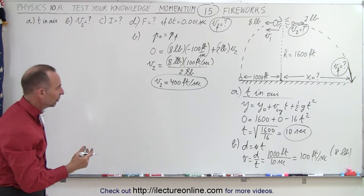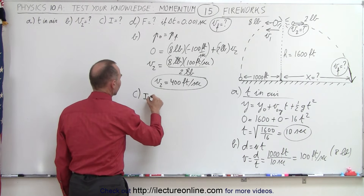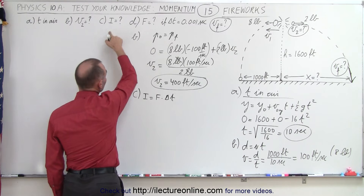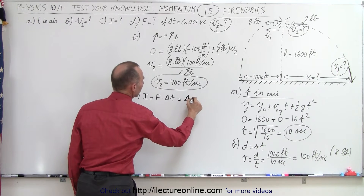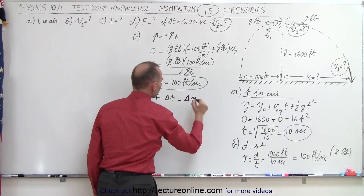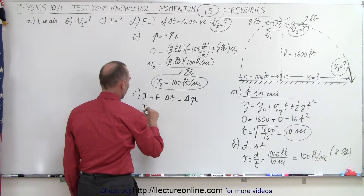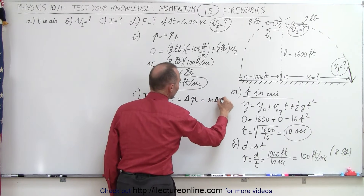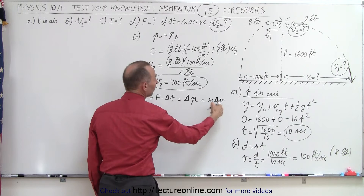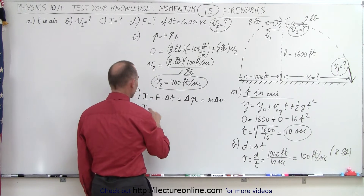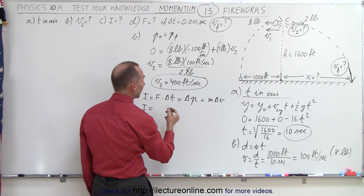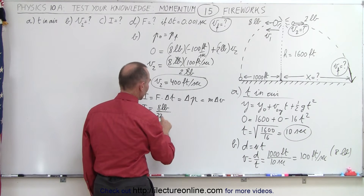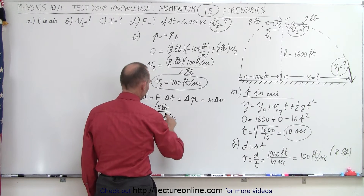We need to find the impulse. The impulse for part C can be defined as force times delta-t, but since we don't know delta-t yet, we can say that impulse equals the change in momentum, delta-p. So impulse equals mass times delta-v. We use the eight-pound piece: eight pounds divided by 32 feet per second squared gives us slugs.